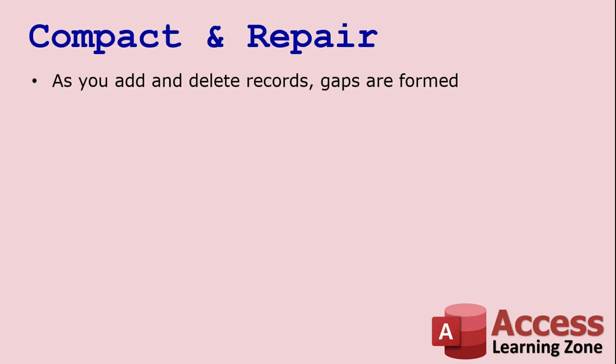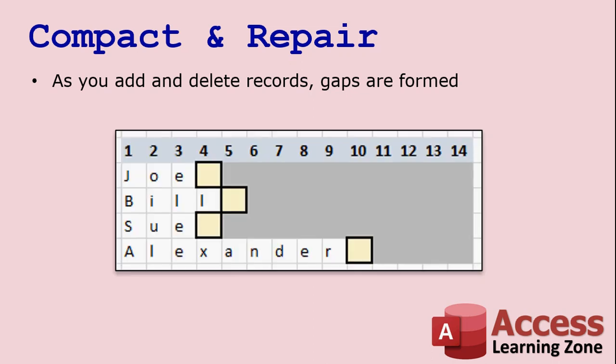Well Patrick, there's a feature in Microsoft Access called Compact and Repair. The repair part of it will fix any problems in your database, but the compact part helps to keep those problems from forming in the first place. As you add and delete records in your database, little gaps are formed between them. Let's say you've got a table with four records in it: Joe, Bill, Sue, and Alexander. Access does a really good job of not wasting any extra space inside of that text field.